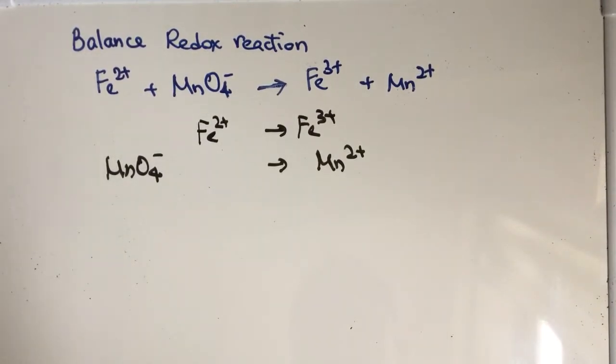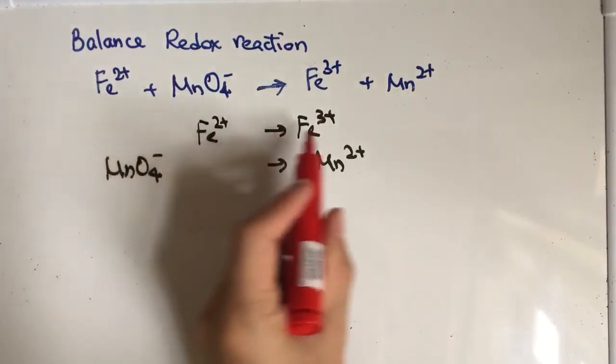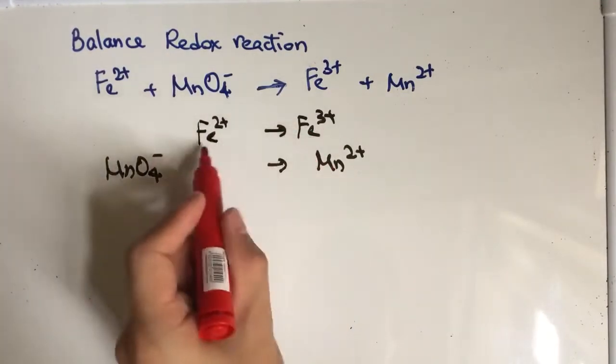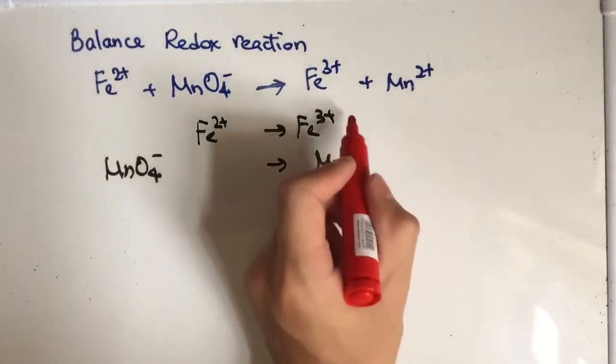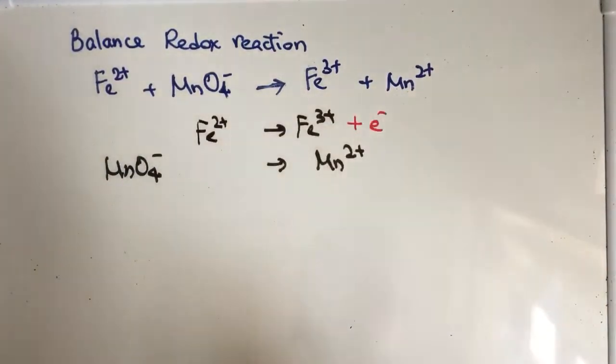So the first one, Fe2+ here, Fe3+ here. Same number of iron here, so we only have to balance the charge. So on the product side, you add one electron.